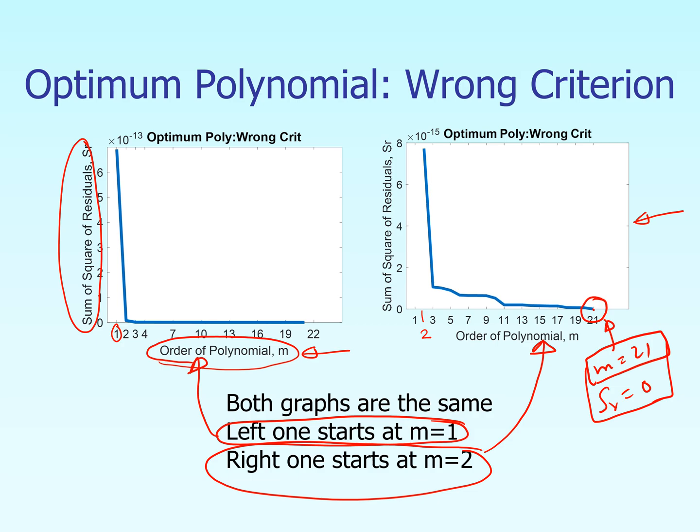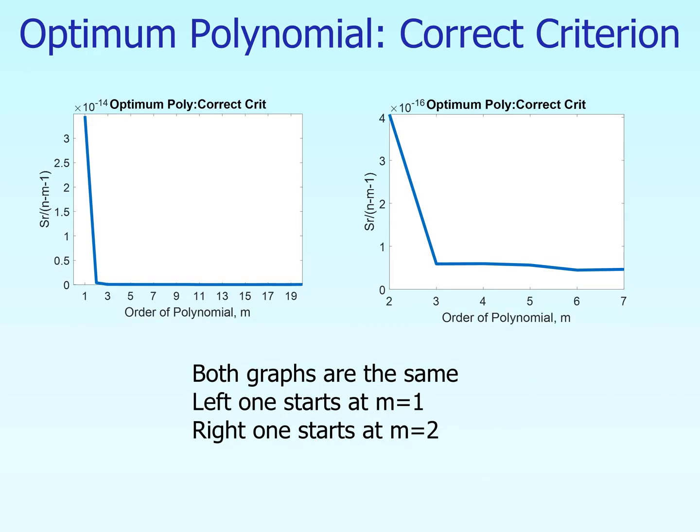If we use the criterion to choose the optimum polynomial to be, let's pick up a polynomial for which the sum of the square of the residuals is as small as possible, you'll find out that the polynomial which goes through all the data points would be the optimum one to use. And we very well know that that's not regression. We are trying to simplify, to explain the data by a simple model. Here, we're going to take 22 data points and make it go through 21st order polynomial. So there should be some mechanism of choosing an optimum polynomial.